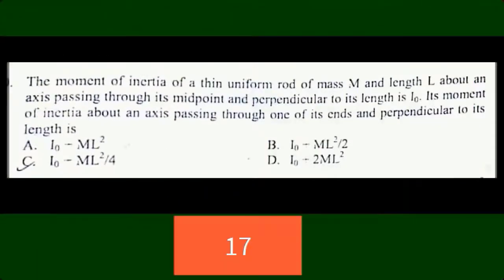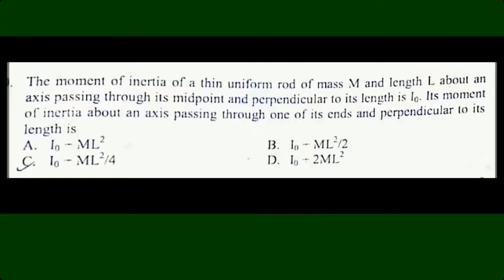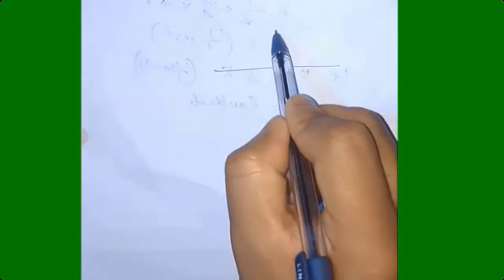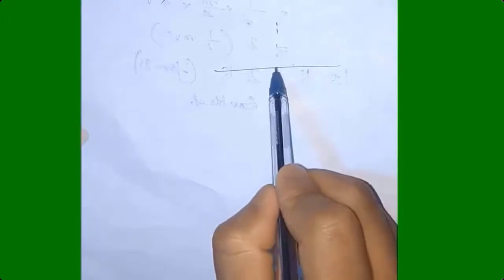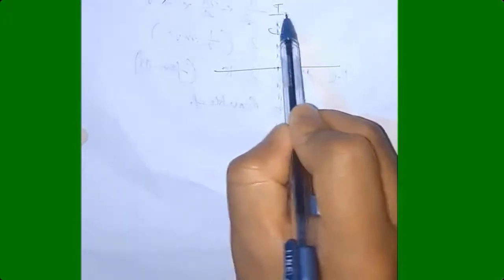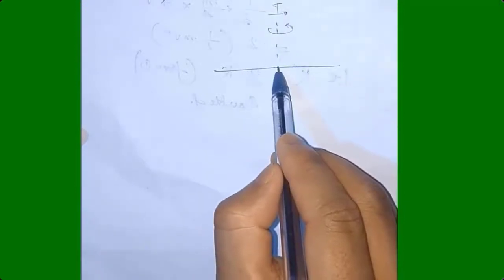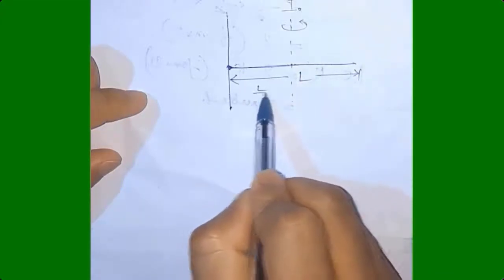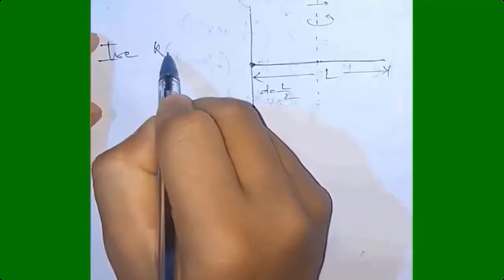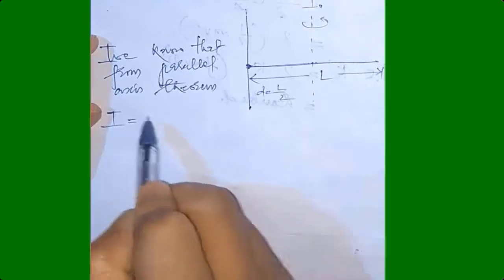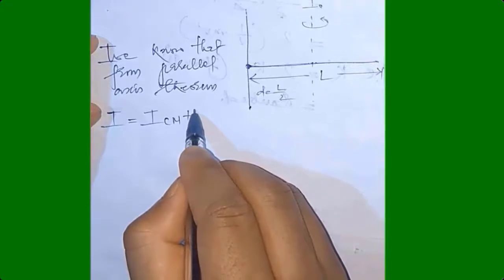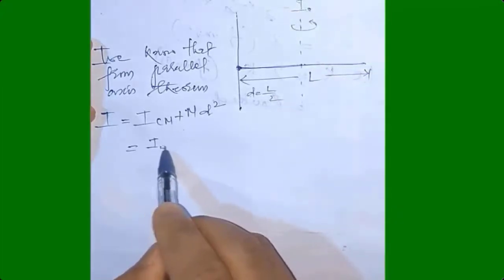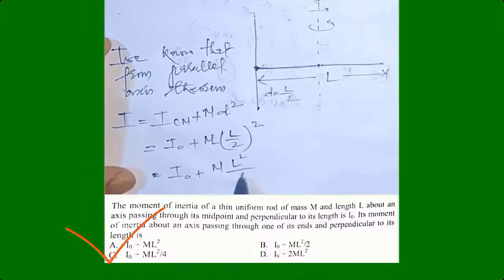The moment of inertia of a thin uniform rod of mass M and length L about the axis passing through its midpoint and perpendicular to its length is I_naught. Now they have changed the axis of rotation to one end. If the rod has length L, then the distance from the midpoint to the end is L/2. Using the parallel axis theorem: I equals I_naught plus M times d squared, where d equals L/2. Therefore, I equals I_naught plus M times (L/2) squared equals I_naught plus ML squared/4.